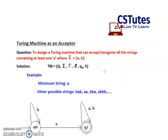In order to design a Turing machine as an acceptor, the easiest solution is to first generate the DFA for this particular problem. Whenever you are asked to generate a Turing machine as an acceptor, first draw a DFA and then convert it into your Turing machine — it would be much easier.